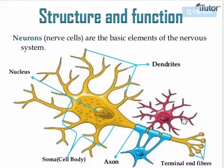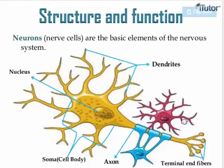The peripheral nervous system is formed of every single part of your nervous system except the brain and spinal cord, while the central nervous system is formed of the brain and spinal cord. The peripheral nervous system connects your central nervous system to the rest of your body. It has two parts: the sensory part and the motor part. The motor nerves carry the central nervous system's responses to sensory information.